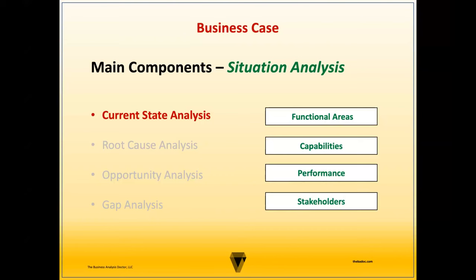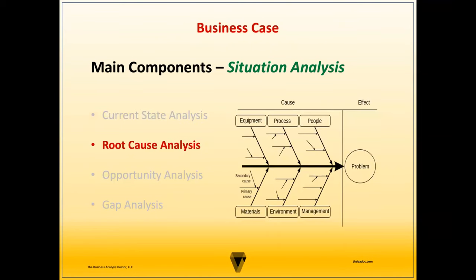The situation analysis should elaborate on the problem or opportunity statement. Once the current state has been described appropriately and agreed upon by stakeholders, it needs to be analyzed further before taking action. For problem-driven projects, the business analyst needs to further analyze and decompose the problem to determine the true cause. A cause-and-effect diagram, otherwise known as the fishbone or Ishikawa diagram, is one of the primary techniques used to identify the core problem, enabling the team to plan for a solution that resolves it.